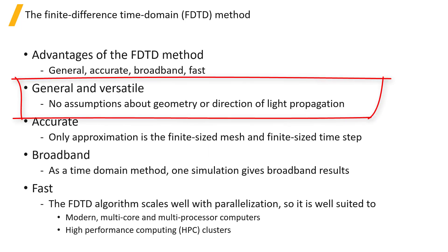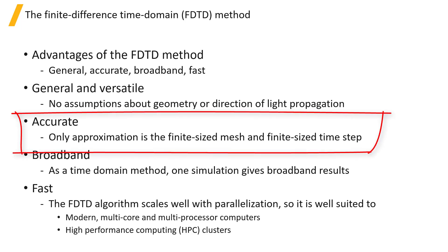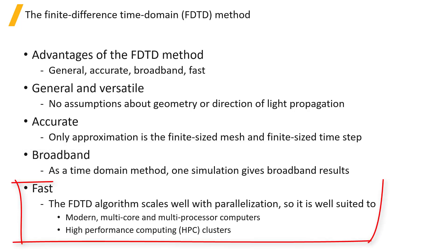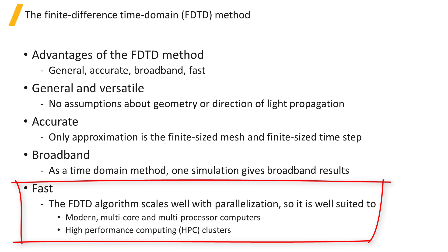FTTD is a general and versatile technique that can deal with many types of problems. It can handle arbitrarily complex geometries and makes no assumptions about, for example, the direction of light propagation. It has no approximations other than the finite size mesh and finite size time step, therefore it is very accurate. As a time domain method, one simulation can give broadband results. Finally, the FTTD algorithm scales well with parallelization, so it is well suited to modern multicore and multiprocessor computers, as well as high-performance computing HPC clusters.